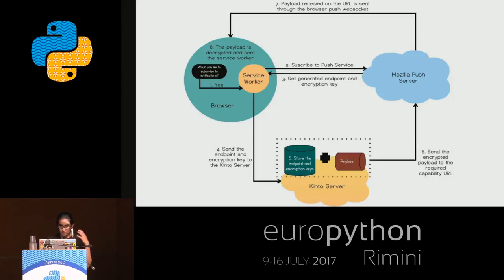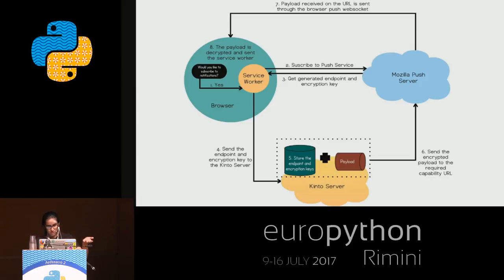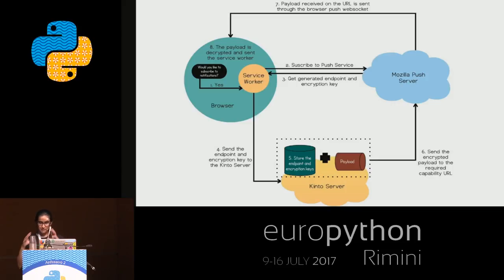When the server has to push information out to users, it takes the payload — the information to be sent — and uses these encryption keys to encrypt the payload. Then it sends a POST request to the push server of the browser saying please send this information across.